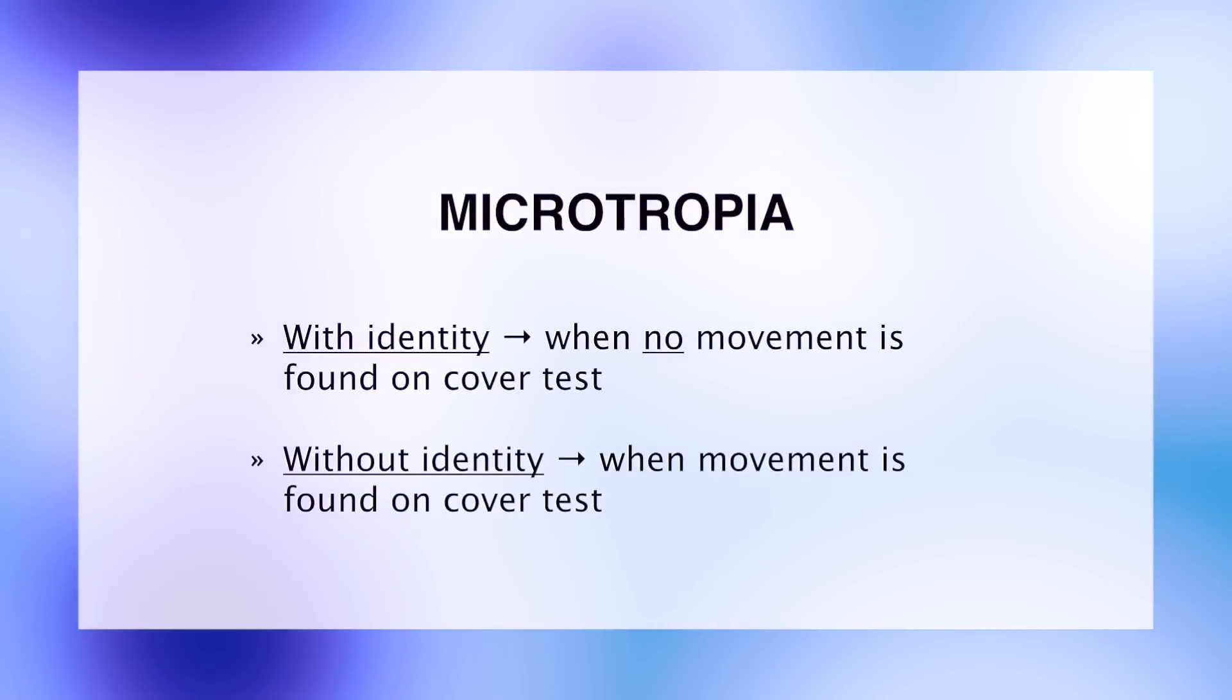We can further classify microtropia into two categories: with identity when no movement is found on cover test, or without identity when movement is found on cover test.